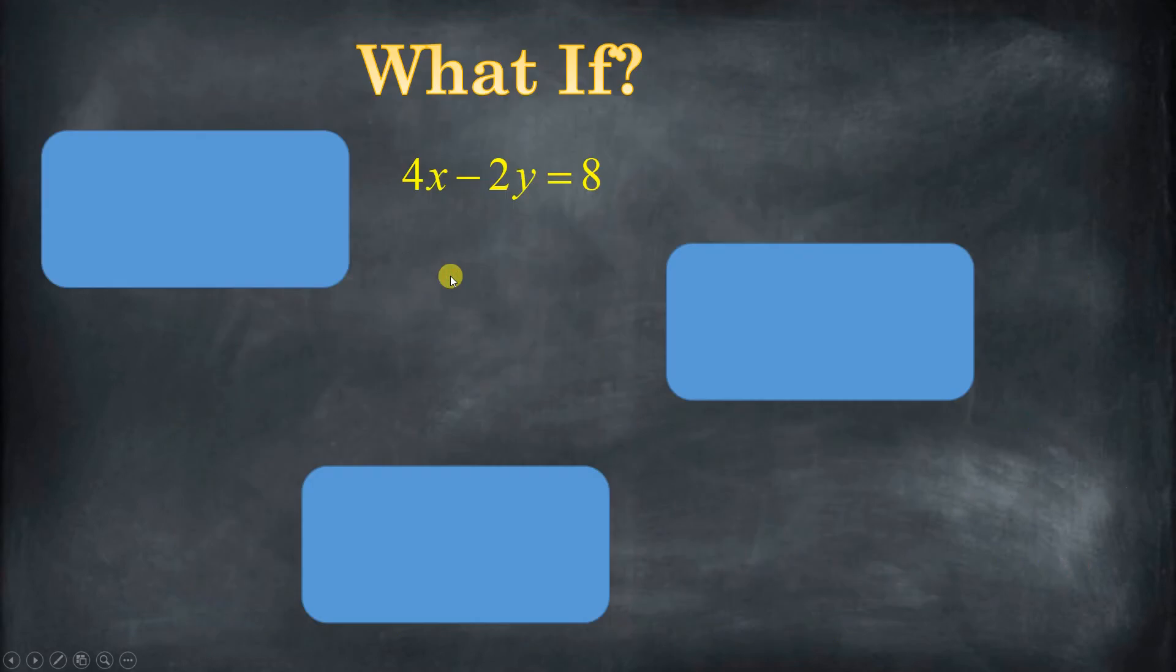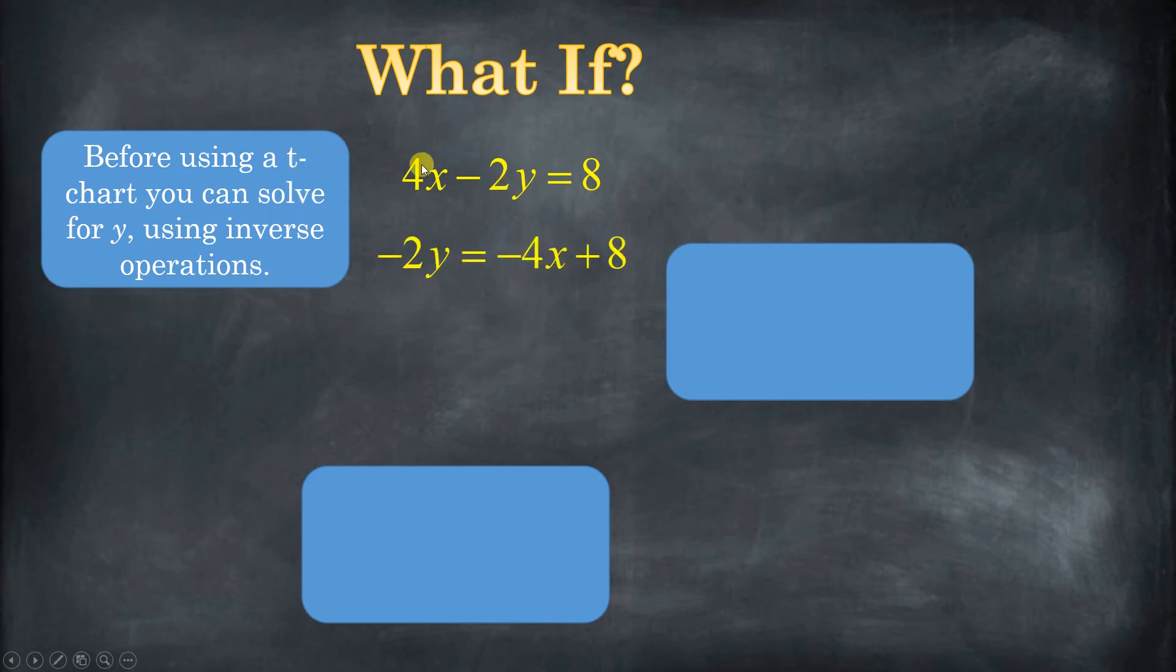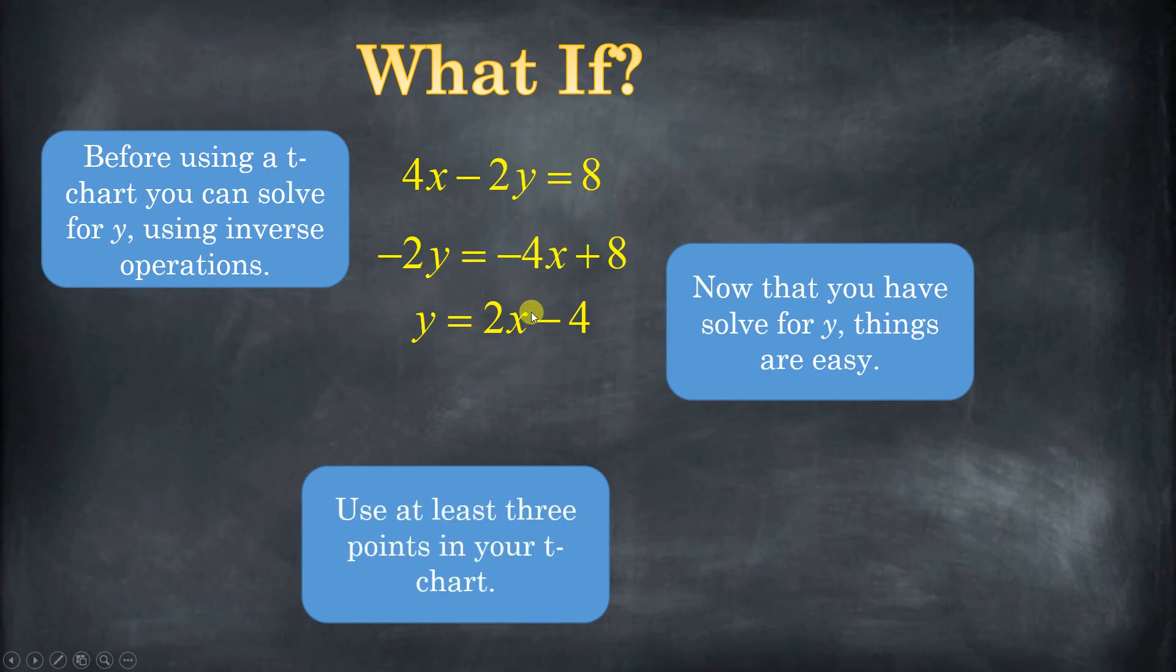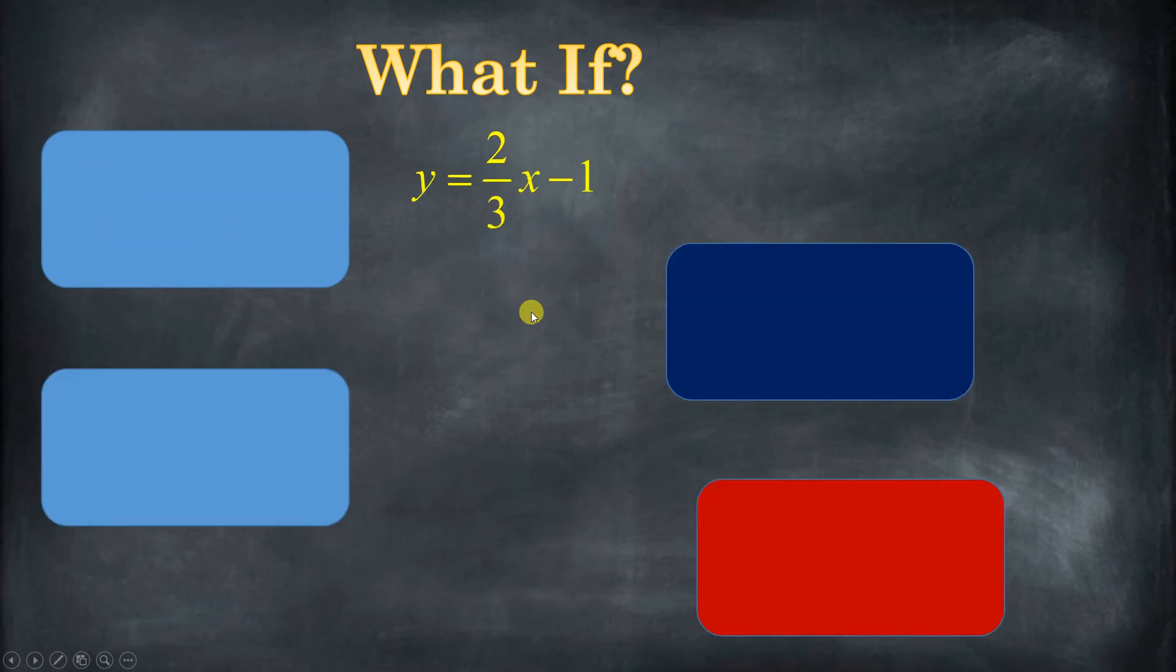Now, what if we had something like this? Four x minus two y equals eight. Well, before you are going to use a t-chart, you might want to use inverse operations to solve for y. That means we want to get y by itself. To get y by itself, we're just going to use inverse operations. We're going to subtract four x from both sides, and then we're going to divide everything by negative two. So when I divide negative four by negative two, I get two. When I divide eight by negative two, I get negative four. Now, we have y by itself, so it's super easy to plug into your t-chart. So you plug it in, boom, you're done.